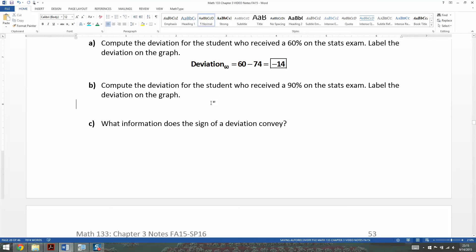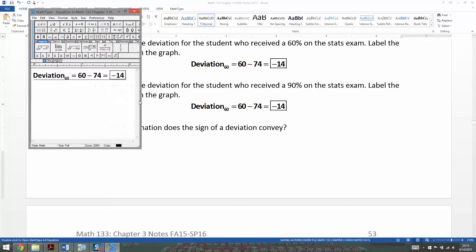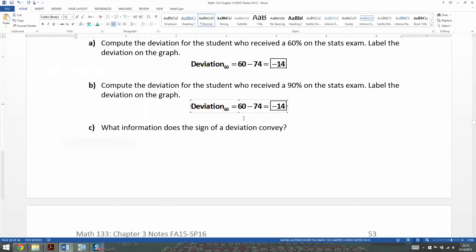Now I want to do it again, but for a score of 90. So if a student's score is 90, we would take away 90 minus 74, and that would give us a deviation of 16. Okay, so what does that tell us?